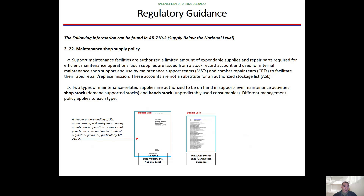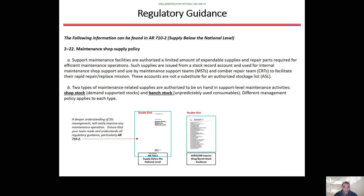For regulatory guidance, everything covered here can be found in AR 710-2, maintenance supply policies. Support maintenance facilities are authorized a limited amount of expendable supplies and repair parts for efficient maintenance operations. There are two types of maintenance-related supplies: shop stock and bench stock — demand-supported and unpredictable-use consumables. Different management policies apply to each, so reach out to your brigade and division and also reference AR 710-2 and the FORSCOM interim on shop stock and bench stock guidance.